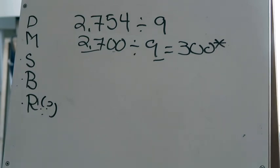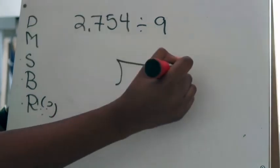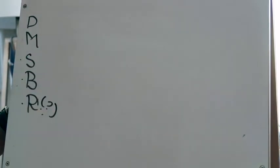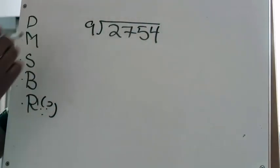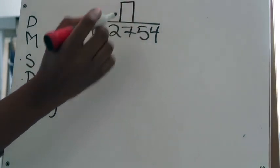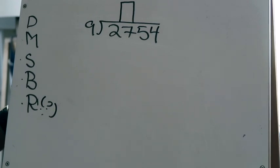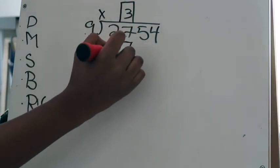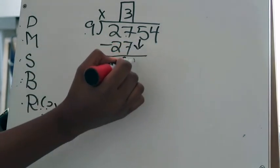My real answer should be around 300, so the first digit goes in the hundreds place. I draw my division house — I'll put it a bit higher so I don't run out of room — placing 2754 inside and 9 outside. I box the digit in the hundreds place in the dividend. Starting my division steps: D — 9 goes into 27 three times. M — 3 times 9 is 27. S — subtract 27 minus 27 is 0. B — bring down the 5.